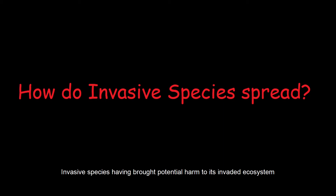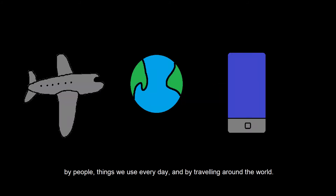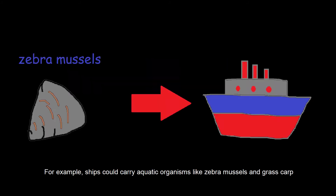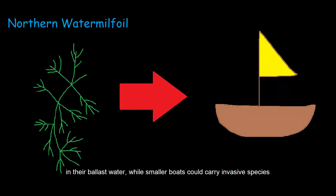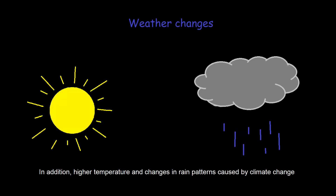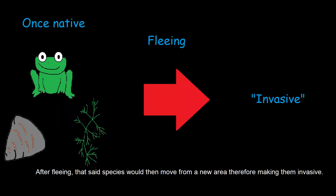Invasive species, having brought potential harm to their invaded ecosystem, are actually spread by human activities unintentionally — by people, things we use every day, and by traveling around the world. For example, ships could carry aquatic organisms like zebra mussels and grass carp in their ballast water, while smaller boats could carry invasive species such as sea lamprey and northern water milfoil on their propellers. In addition, higher temperatures and changes in rain patterns caused by climate change will enable some invasive species to move into new areas.